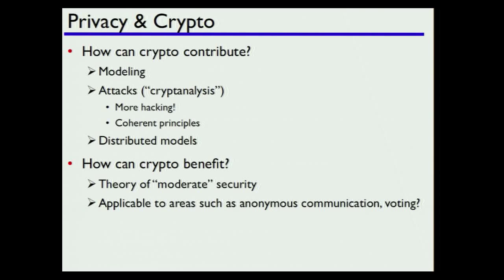What can crypto get out of this? Privacy has this aspect where we're forced to deal with non-negligible leakage of information. One of the interesting aspects is that it pushes us to develop a theory of how to think about moderately secure settings — things that come up to some extent already in crypto but with a different twist. Some ideas being developed in this area will have applications to more traditional crypto areas like anonymous communication systems and voting.